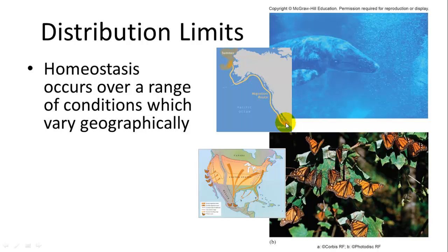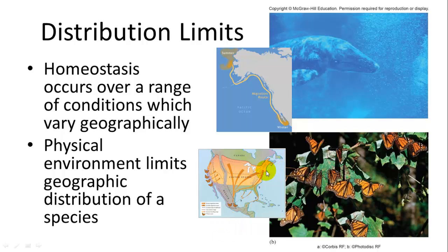The gray whale, for example, migrates from the southern tip of Baja all the way up to the Arctic range of Alaska and Siberia. Monarch butterflies, a very lightweight insect, can also migrate thousands of miles from northern latitudes in the United States down to Mexico. But no animal can go worldwide — none has such a broad homeostatic range that it can survive in all environments, because of the physical limits of each environment.